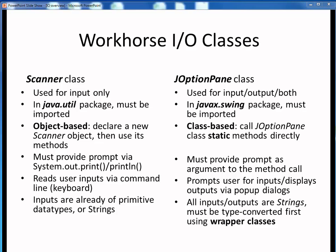In this course, and in the next few lecture segments, we're going to focus our attention on these two workhorse I/O classes: Scanner and JOptionPane. We've already used the Scanner class in our programs, but we'll be looking at it in more detail now. The JOptionPane class will be new for us. We'll be using the Scanner class for user input only, but the JOptionPane class can be used for input, output, or both. Both classes are found in packages external to core Java, so they both must be imported. Scanner is java.util.Scanner, and JOptionPane is javax.swing.JOptionPane. The JavaX swing package is home to many useful GUI element classes. Scanner is an example of a more typical object-based class — we declare a new Scanner object, then use its various methods to read input of any specified core data type.